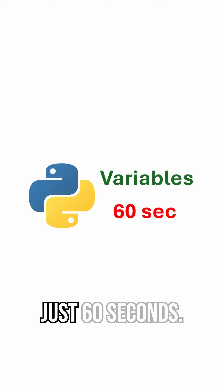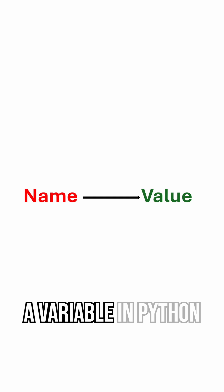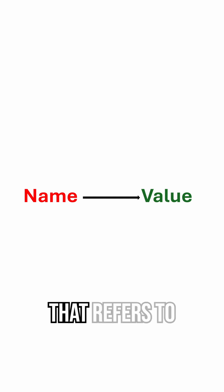Let's understand Python variables in just 60 seconds. A variable in Python is simply a name that refers to a value.